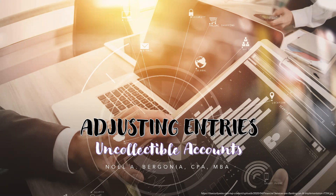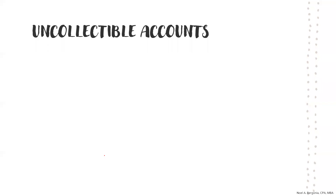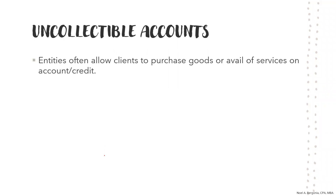We have mentioned in our introduction that adjusting entries are entries prepared at the end of the accounting period to update the balances of the accounts. We have also mentioned that there are different types of adjusting entries, and one of them is about uncollectible accounts. When we talk about accounts receivable, the entities are often allowing clients or customers to purchase goods or to avail services on account or on credit.